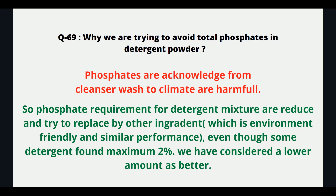Why do we try to avoid total phosphate in detergent powder? Phosphates that are washed from garments into the water supply are harmful to the climate. So phosphate requirements for detergent mixtures are being reduced and replaced by other ingredients which are environmentally friendly with similar performance. Even though some detergents contain a maximum of 2 percent, a lower amount is considered better.